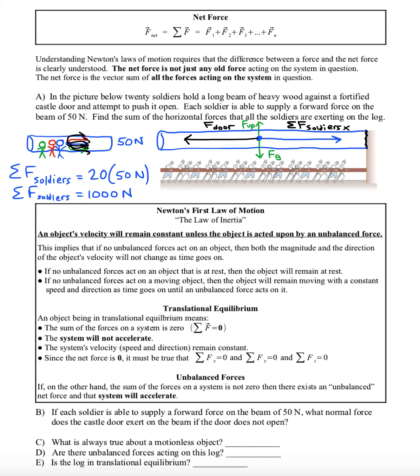The law implies that if no unbalanced forces act on an object, then both the magnitude and the direction of the object's velocity will not change as time goes on. So if the beam starts at rest and it feels these forces, it's going to stay at rest. But the law also tells us that if no unbalanced forces act on a moving object, then the object will remain moving with a constant speed and constant direction as time goes on until an unbalanced force acts on it.